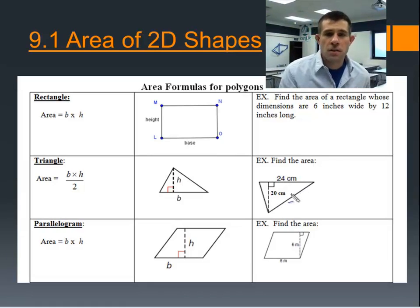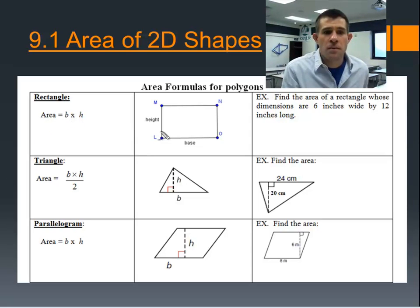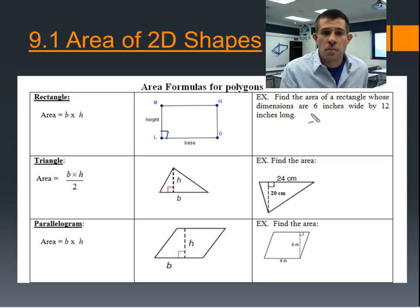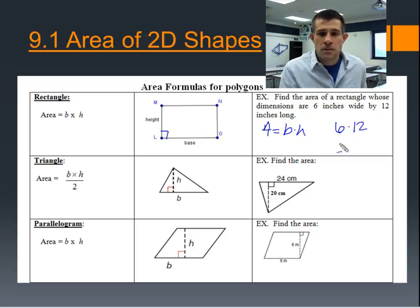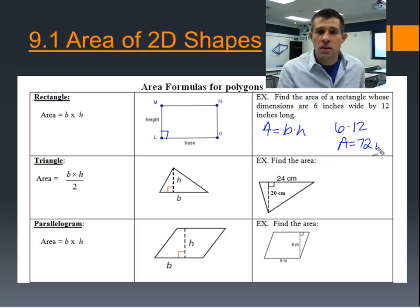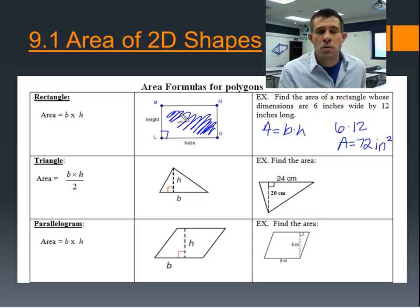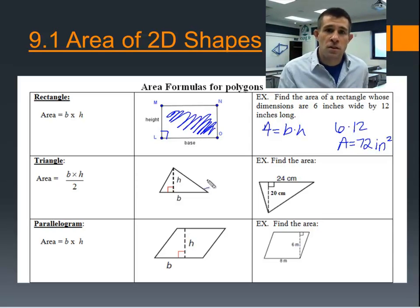Today we're talking about two-dimensional shapes and finding their areas. We'll start with a rectangle. The area formula for a rectangle is base times height — base and height must always intersect at 90 degrees, perpendicular to each other. Find the area of a rectangle whose dimensions are 6 inches wide by 12 inches long. Using base times height: 6 times 12 gives an area of 72 inches squared. Area is a measurement of the two-dimensional space between the borders of a shape, so we always express it in units squared.